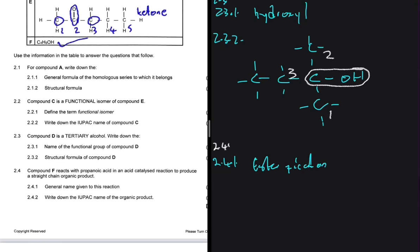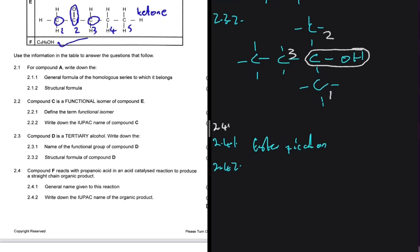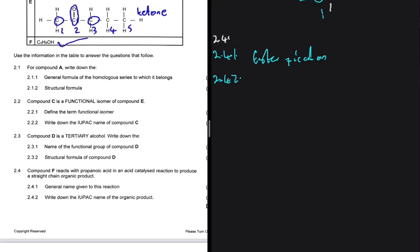And then now 2.4.2, the question is saying, let's write down the IUPAC name of this organic product. So let's look at it. This is how you name an ester. The first part of the name comes from the alcohol, and then the second part of the name comes from the acid.